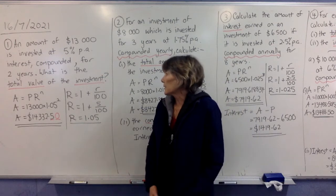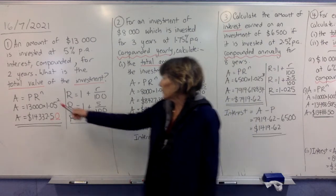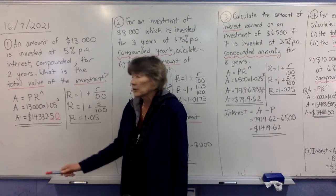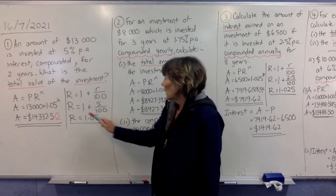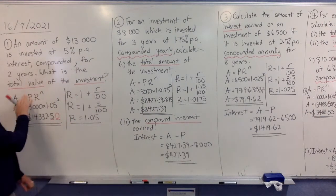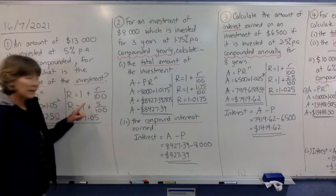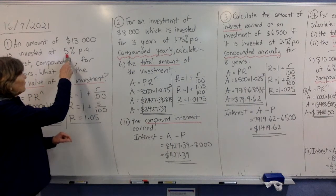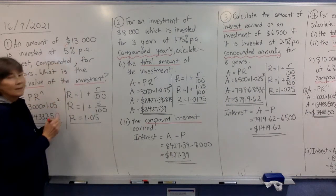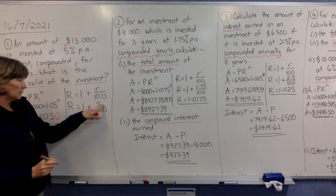And it's there for two years. So it says, what is the total value of the investment? Remember that this formula is finding the total value of the investment, it's not finding the interest. Okay, so we start over here with the working. We'll put the two formulas side by side, and then we're going to start here. If you have a look up here, we've got 5%. That is our r, that's our little r.